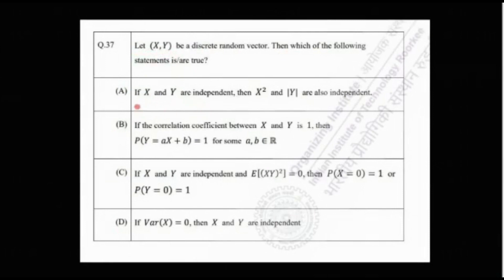The first option says that if X and Y are independent, then X² and |Y| are also independent. So we have to determine if this is true or not.